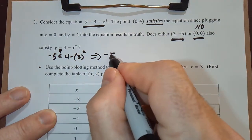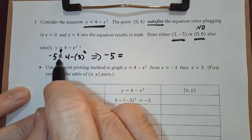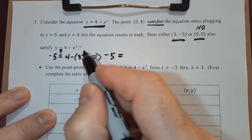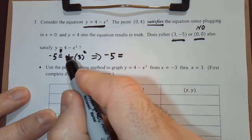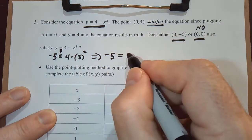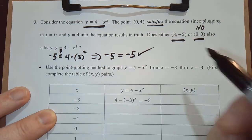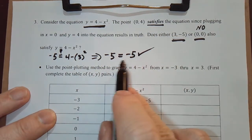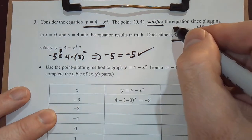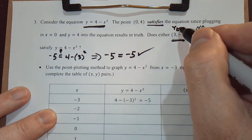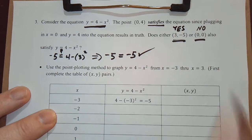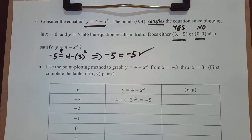Let's see, that left-hand side is negative 5, the right-hand side is 4 minus 9, 3 squared is 9, 4 minus 9 is negative 5. So that one works. Negative 5 is equal to negative 5, so clearly, 3 comma negative 5 does satisfy the equation.